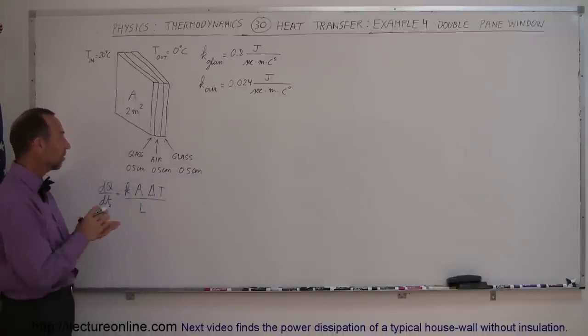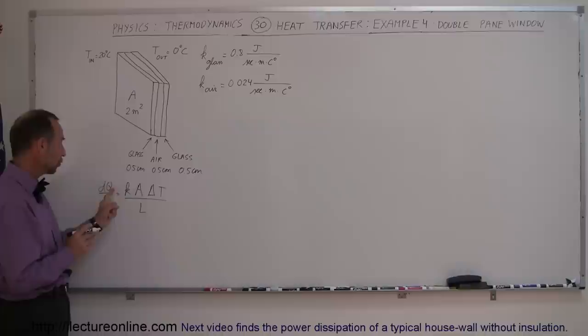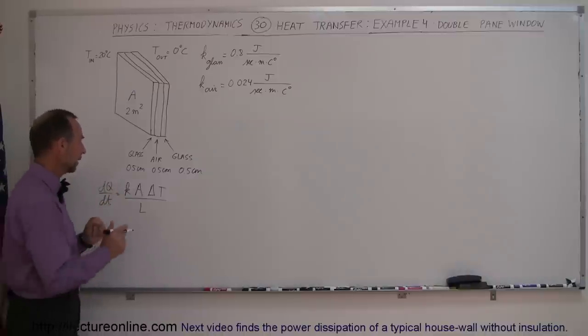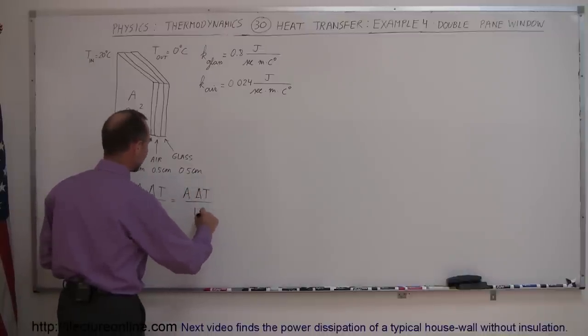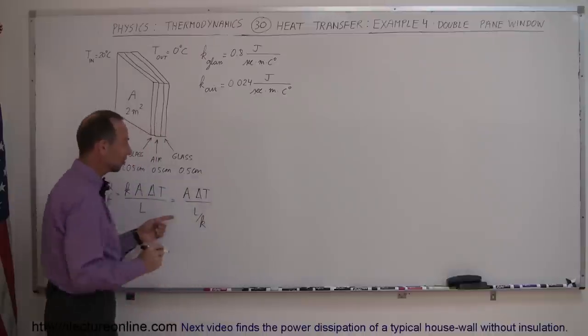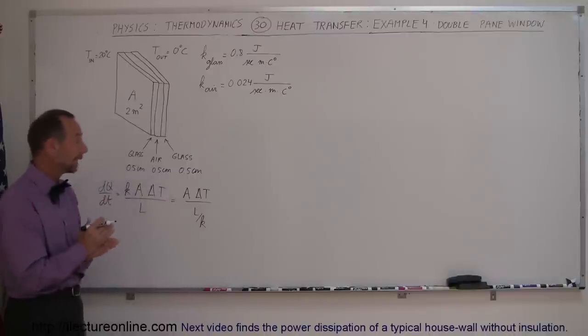But in this case, since there's more than one layer, there's three layers here, we can't use the equation as is. What we're going to do is take the k and bring it down. We'll write this as A, the cross-sectional area, times the difference in temperature, divided by L divided by k.